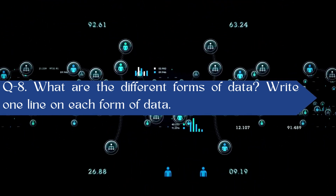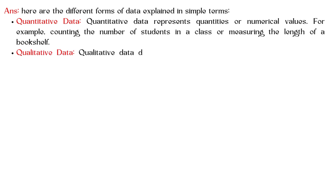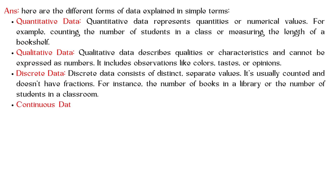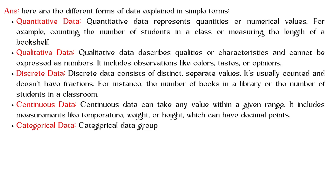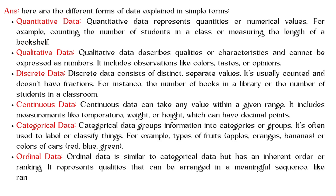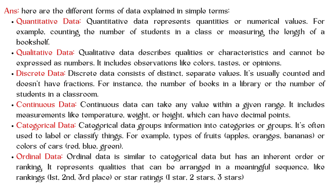What are the different forms of data? Quantitative data represents quantities or numerical values — for example, counting the number of students in a class or measuring the length of a bookshelf. Qualitative data describes qualities or characteristics that cannot be expressed as numbers, including observations like colors, tastes, or opinions. Discrete data consists of distinct, separate values — usually counted without fractions, like the number of books in a library.